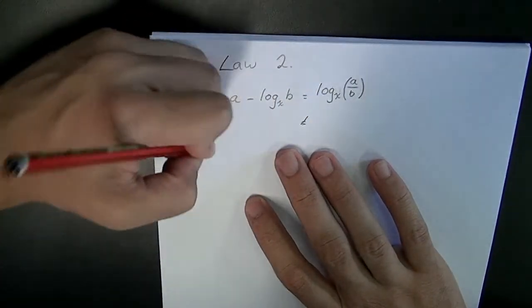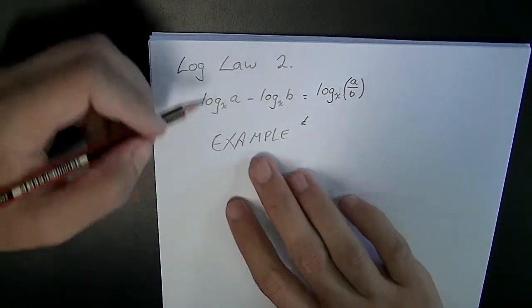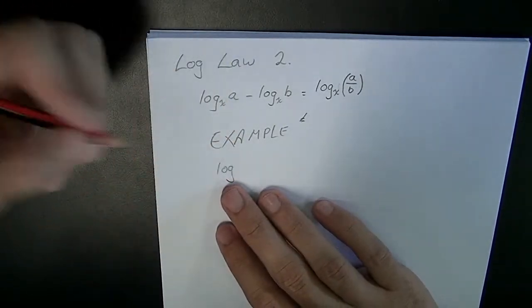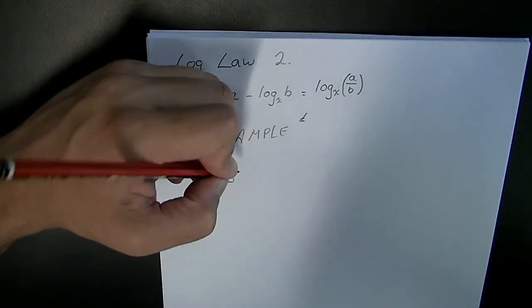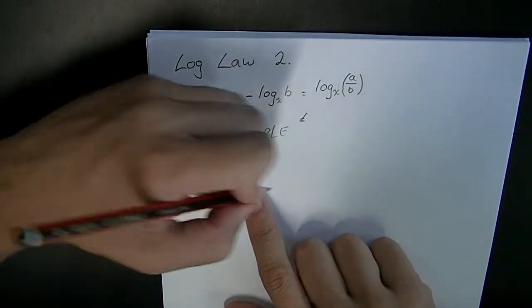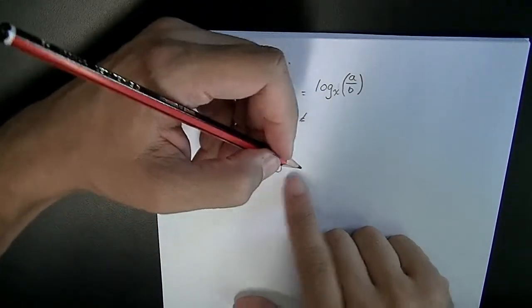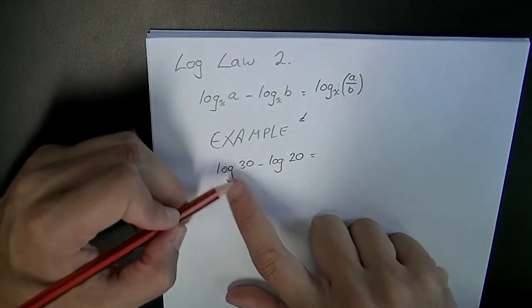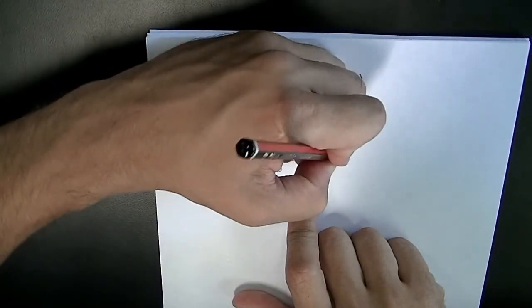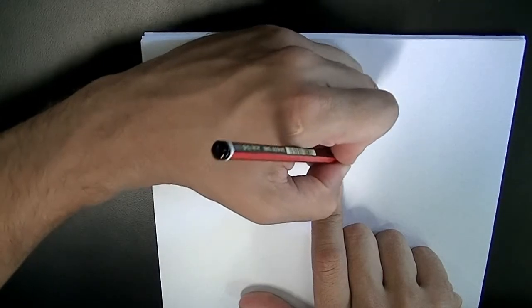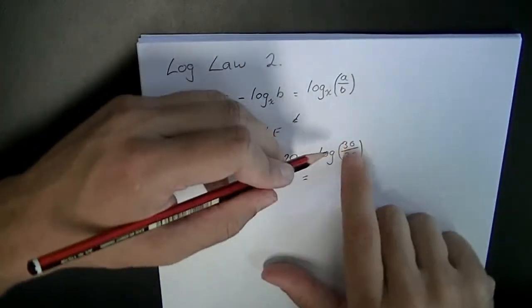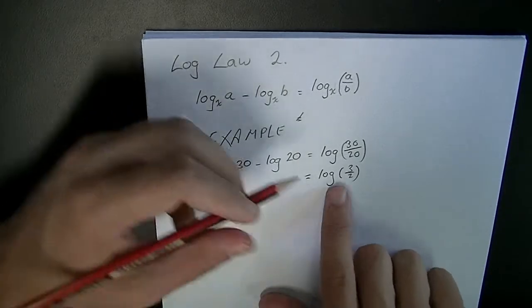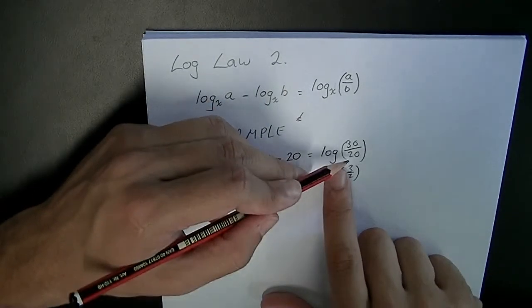Looking at an example here. We could say log base 10 of 30 minus log base 10 of 20 equals... We can rewrite that as log base 10 of 30 over 20, and then simplify that as log base 10 of 3 over 2. So log base 10 of 30 minus log base 10 of 20 is equal to log base 10 of 3 over 2.